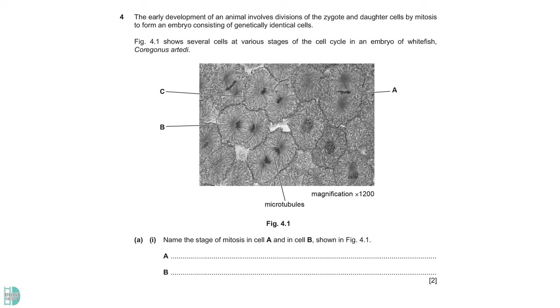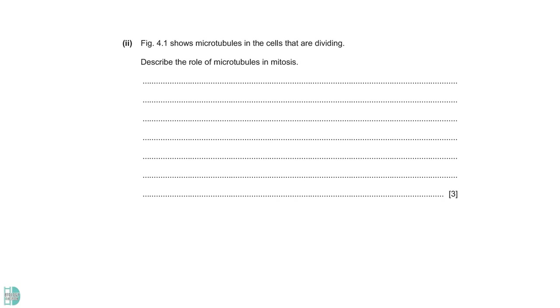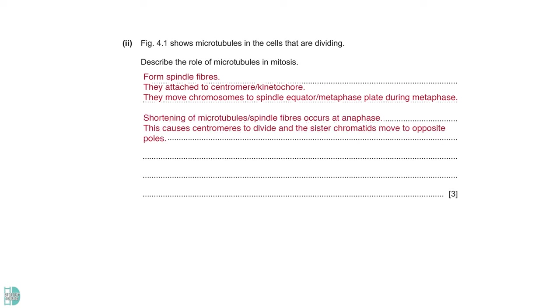Figure 4.1 shows some cells in various stages of the cell cycle. A1, name the stage of mitosis in cells A and B. In A, the chromosomes are all aligned at the equator of the spindle, so this is metaphase. B shows two separate groups of them, but they have not reached the opposite poles, so this is anaphase. Number 2, describe the role of microtubules in mitosis. They form spindle fibers during mitosis. These spindles are attached to the centromere or kinetochore. Then they move chromosomes to the spindle equator during metaphase. Shortening of microtubules occurs at anaphase. This causes centromeres to divide and the chromatids to move to the opposite poles. As a result, daughter nuclei receives one chromatid of each chromosome.